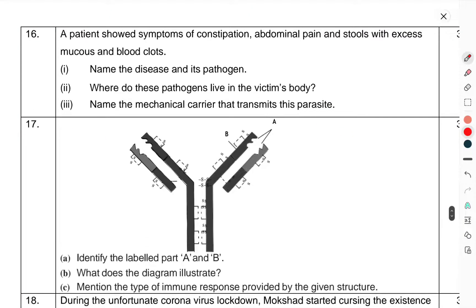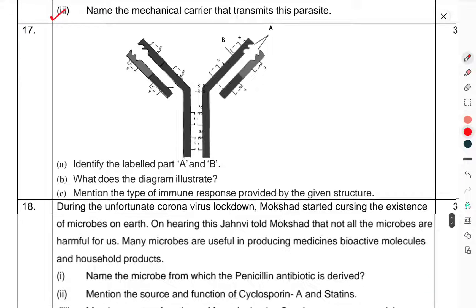Question 16: A patient showed symptoms of constipation, abdominal pain, stools with excess mucus and blood clots. Name the disease and its pathogen. Where does the pathogen live in the victim's body? Name the mechanical carrier that transmits this parasite.